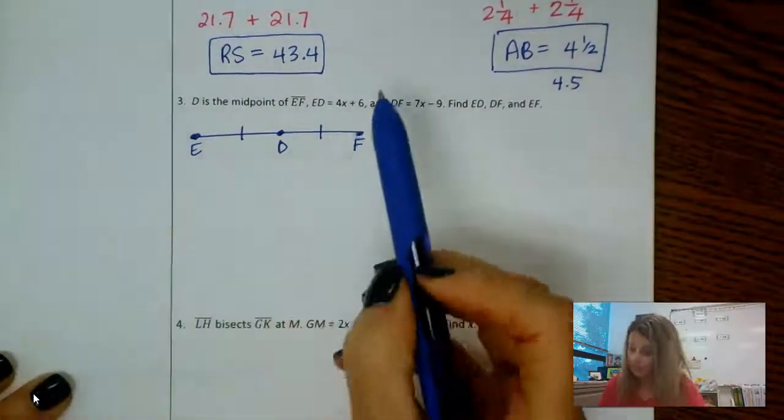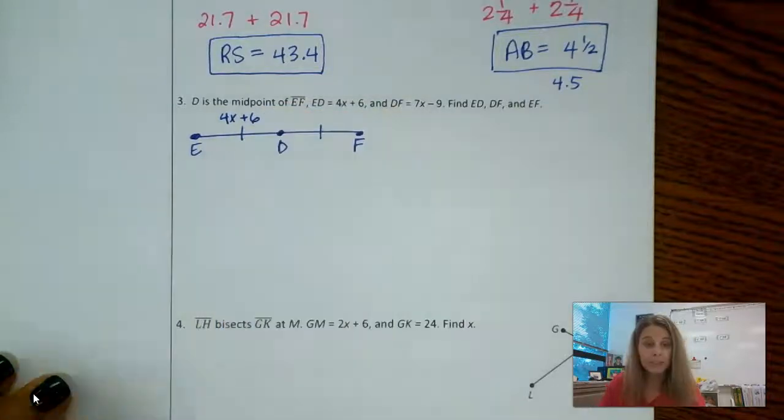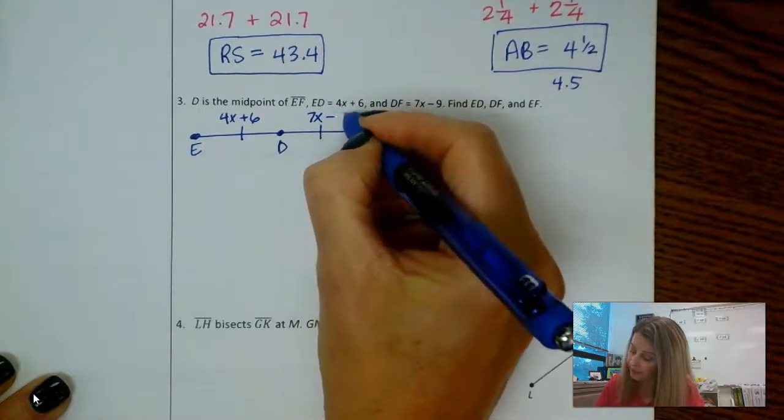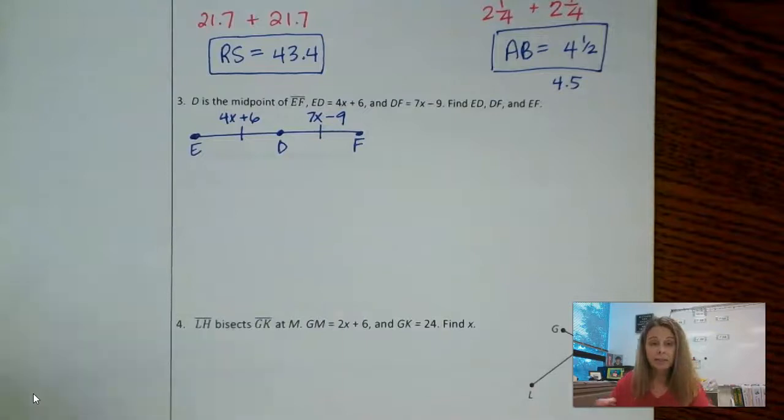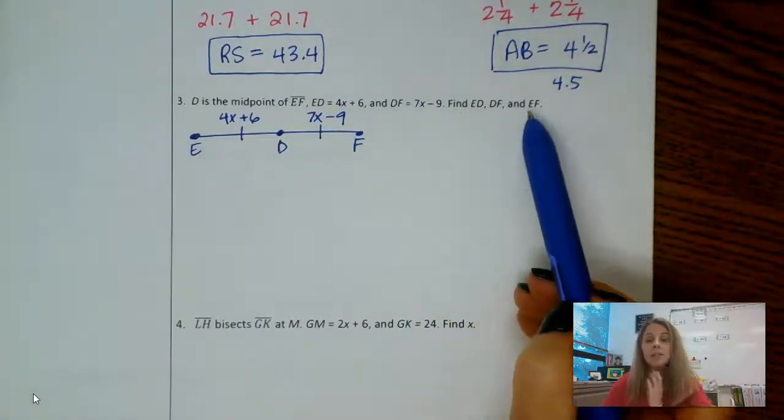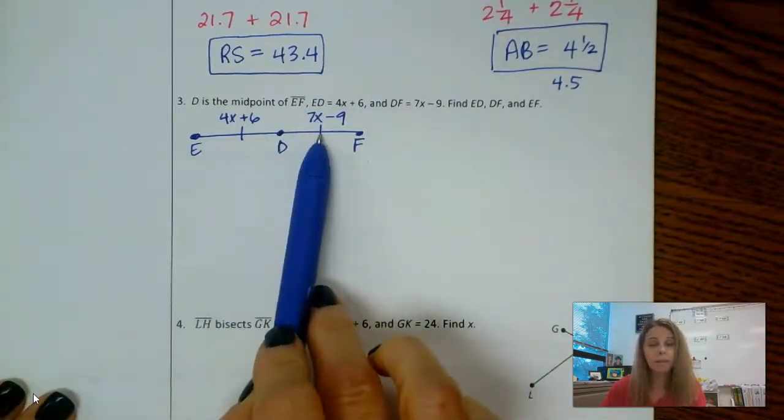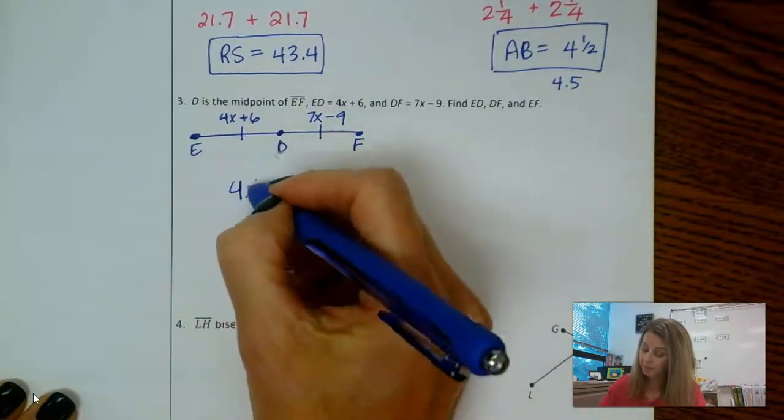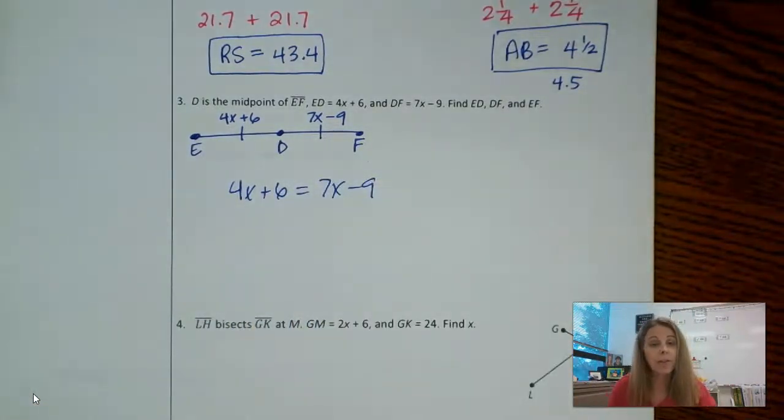Let's label now. ED is 4X plus 6, so ED is 4X plus 6. DF is 7X minus 9, and that's all I have. So I need to first find X before I find these lengths. I don't know the total, so I can't add these together and set them equal to the total. But I do know that because D is the midpoint, these two sides are equivalent. So I am able to write an equation and set those equal to each other, and that will allow me to get X and then find my lengths. So go ahead and solve through this one.